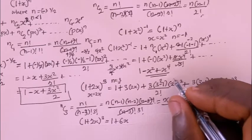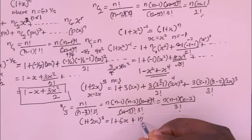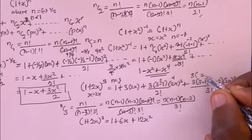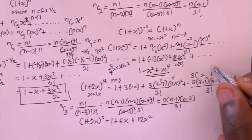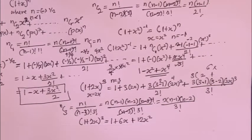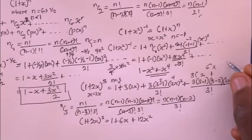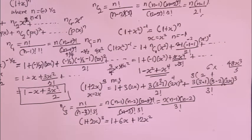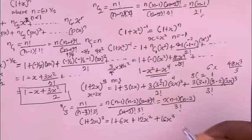Continuing: 3(2)(1) = 6, and (2x)^3 = 8x³, so 6 times 8 = 48x³ divided by 3! which is divided by 6. Wait — 48 divided by 3 gives 16. So we have plus 16x³.